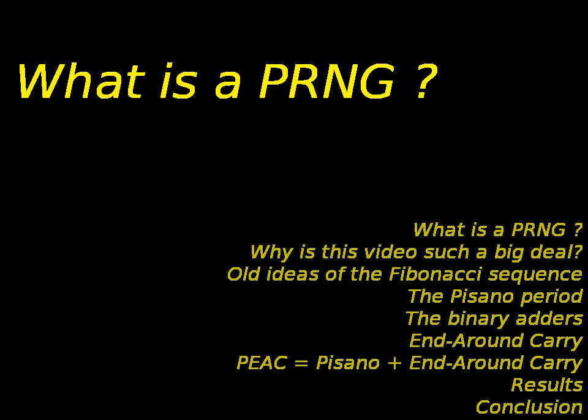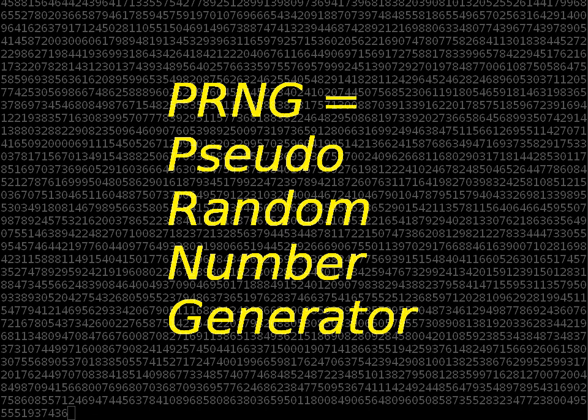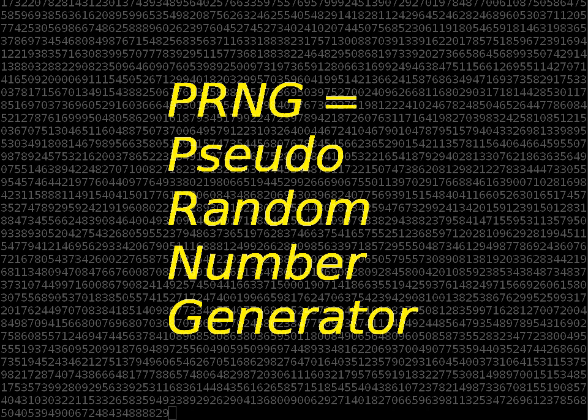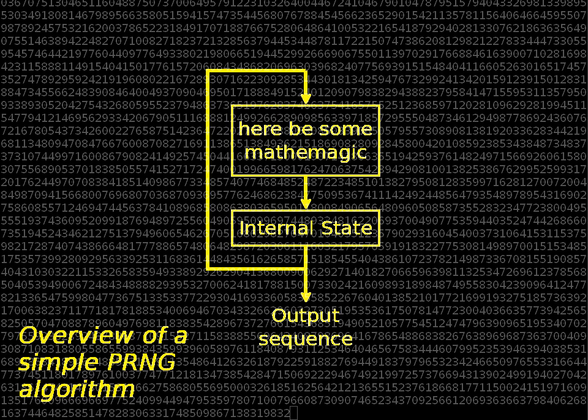First, what is a PRNG? A pseudo-random number generator, as the name implies, is an algorithm that generates a sequence of numbers that look random. This means that the consecutive numbers do not seem to have an obvious correlation. However, if you carefully examine the sequence, you could still recover the algorithm and predict the next values.